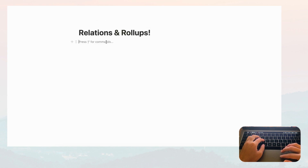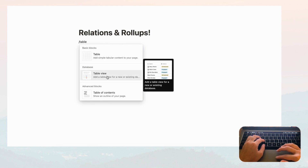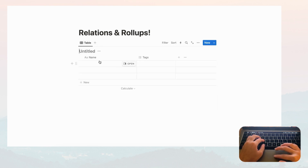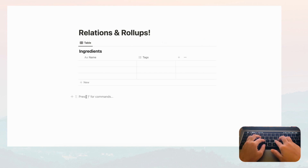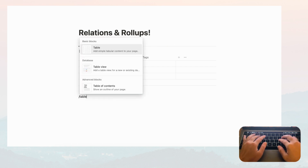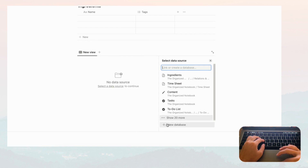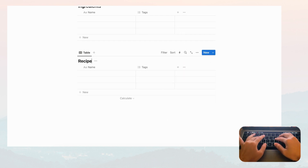We're going to choose an empty page so we have a blank page. Now let's create two databases so that we can make relations with them. Type slash table to make a table view database and click plus new database. To show this example, we're going to make two databases: one for ingredients and one for recipes. Here as well, table view and plus new database, and we'll title this one Recipes.